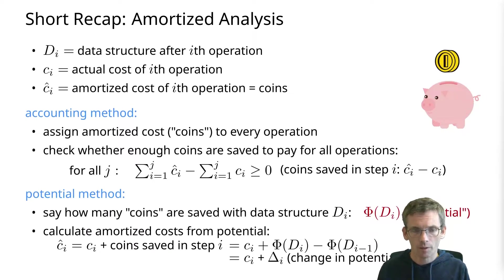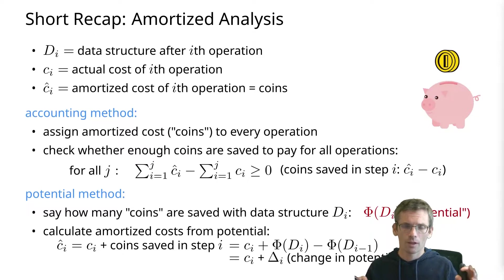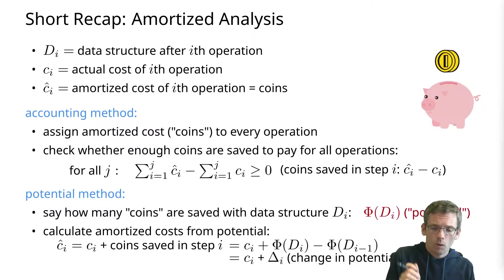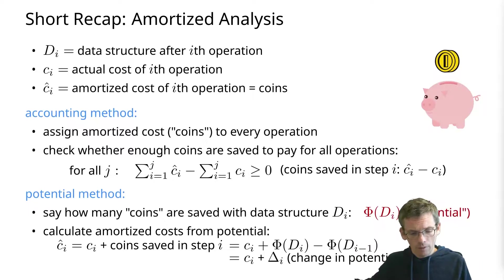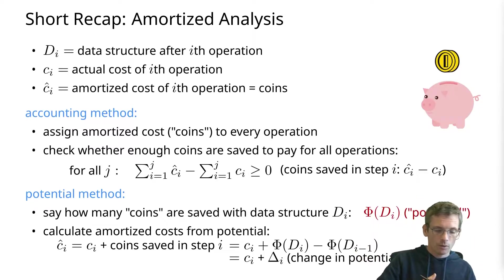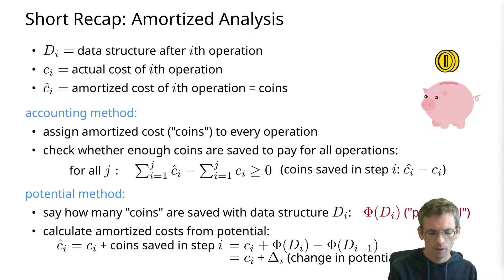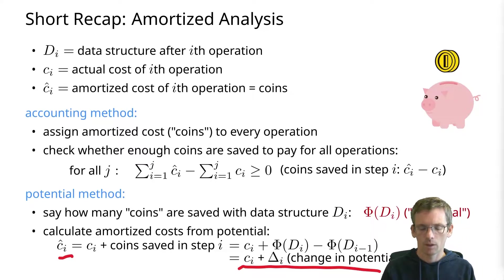The potential method does it the other way around. We define a potential which essentially says how many coins have we saved with D_i. Then if we know how many points we want to save, we can calculate the amortized cost from the actual cost plus the number of coins that we save or lose in that step — so the change in potential. Amortized cost is actual cost plus how much the potential changes.